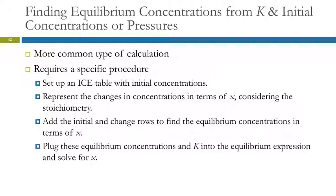This second type of problem is more common and more difficult. We have initial concentrations and an equilibrium constant, and we're trying to find equilibrium concentrations. We set up an ICE table with initial concentrations, then represent the changes in terms of X because we don't know the change. We add the initial and change rows to get equilibrium concentrations in terms of X, plug those into the equilibrium expression, and solve for X. Having a solver on your calculator will make this easier.